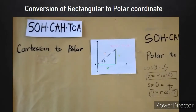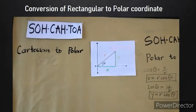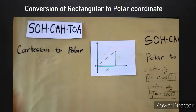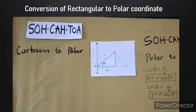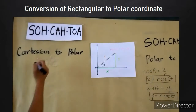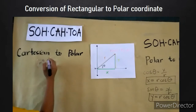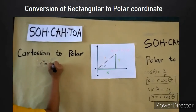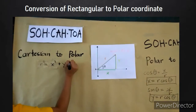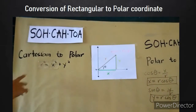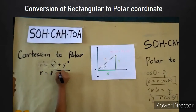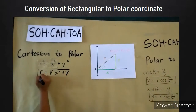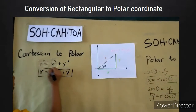To convert Cartesian to polar coordinates, we need to find the value of r and θ. In finding the value of r, we use the Pythagorean theorem, which states that the square of the hypotenuse is equal to the sum of the squares of its two remaining sides. From this, we derive that r squared is equal to x squared plus y squared, so r is equal to the square root of x squared plus y squared.